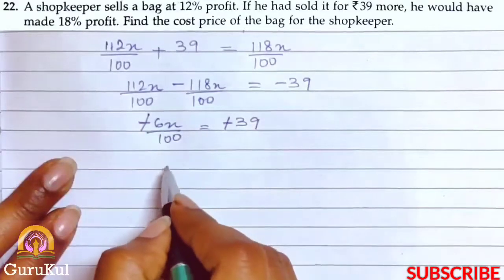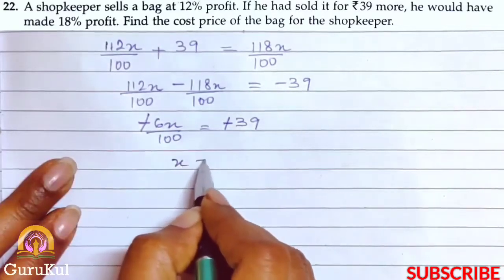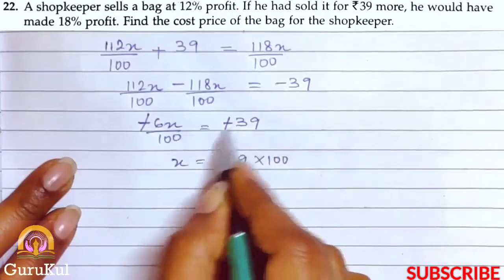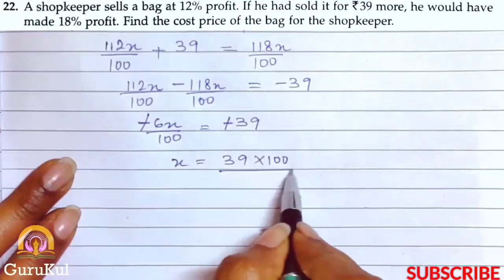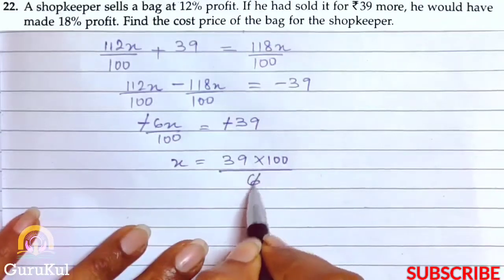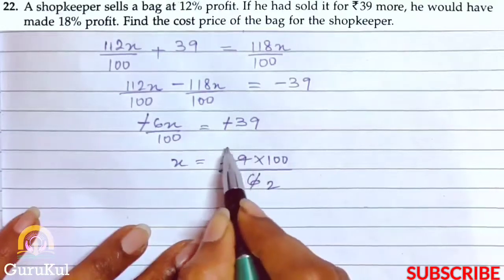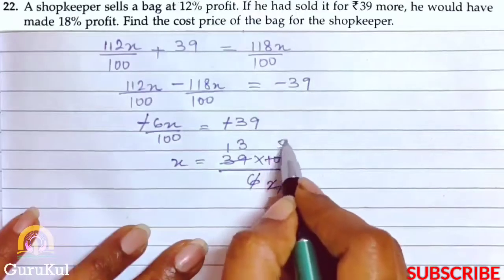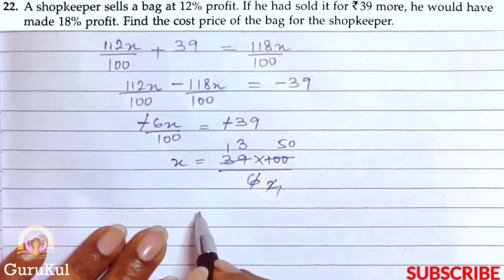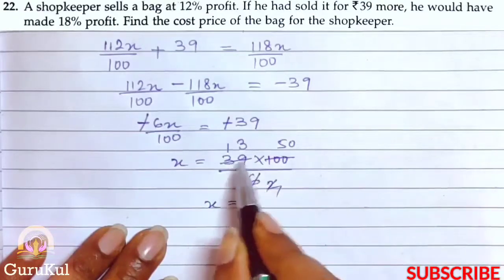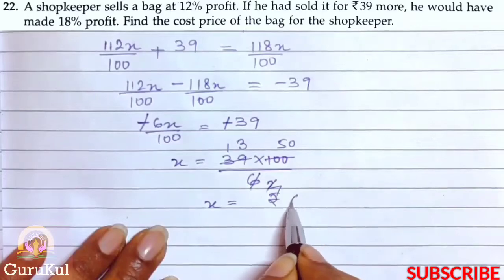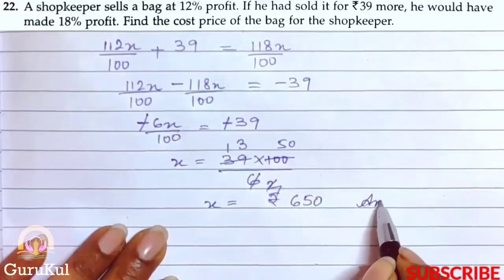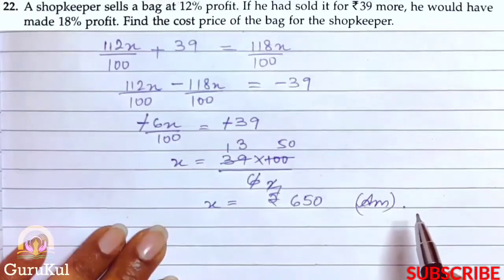Minus and minus got cancelled. So x equals 39 into 100 divided by 6 through cross multiplication. Simplifying: 39 divided by 6 gives 13, times 50 equals rupees 650. This is the cost price of the bag.